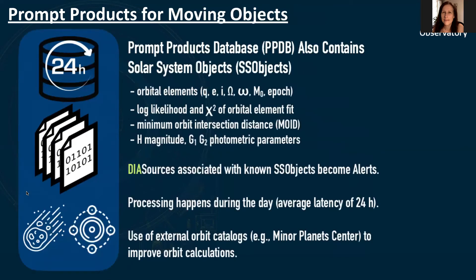Solar system processing is a different process from difference image analysis and will occur in the daytime. Unassociated DIA sources are analyzed to identify tracklets and link observations to identify individual moving objects. Newly identified solar system objects will be reported to the Minor Planet Center, the MPC, along with new observations of known solar system objects. Updated orbit catalogs generated by the MPC based on data from Rubin and other sky surveys will then be ingested into the prompt products database, and the corresponding solar system objects and their associations with DIA objects and DIA sources will be updated. Characterization for solar system objects will then be recomputed, such as orbital elements and photometric parameters, with results available to scientists via the Rubin Science Platform with an average latency of about 24 hours.